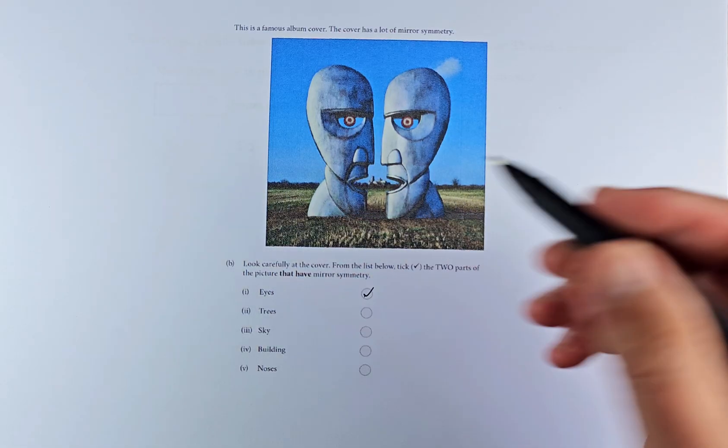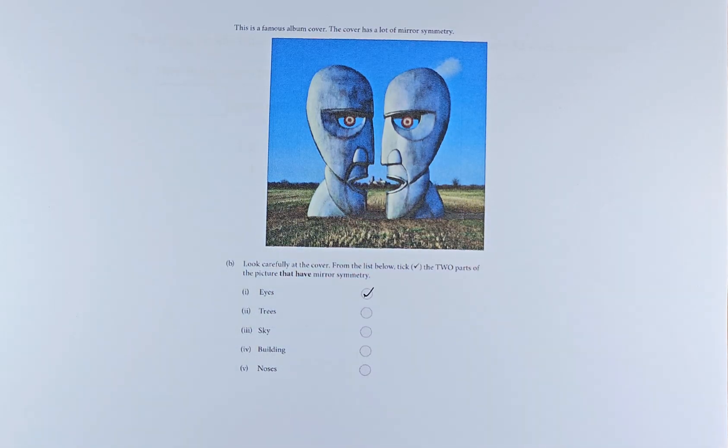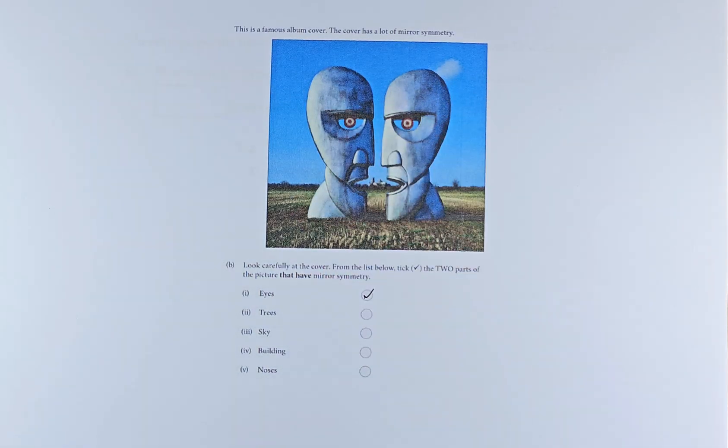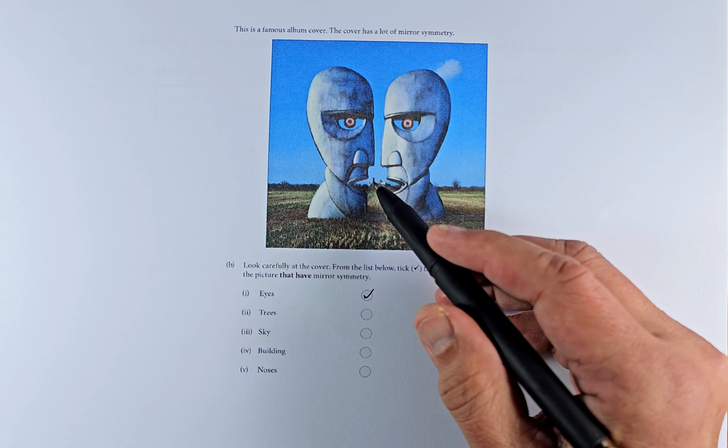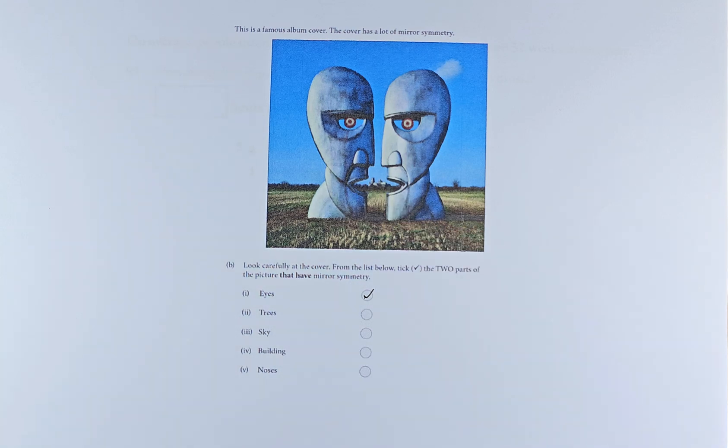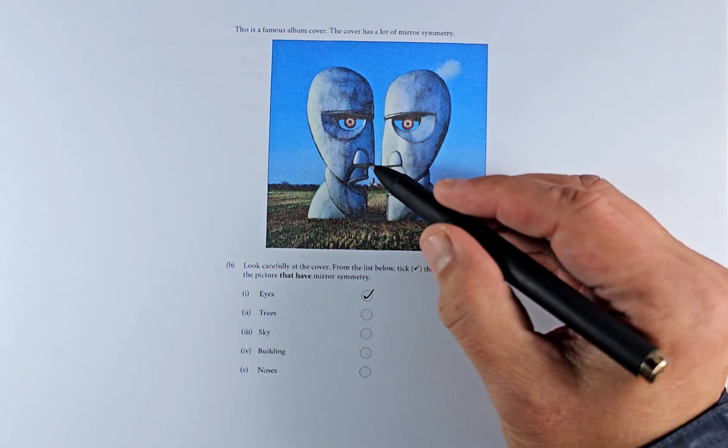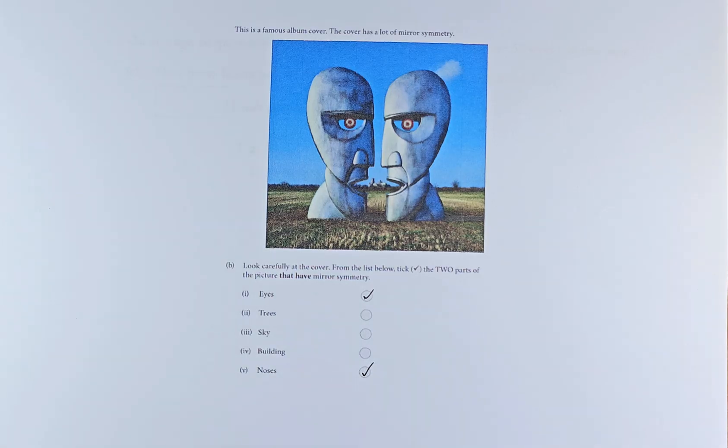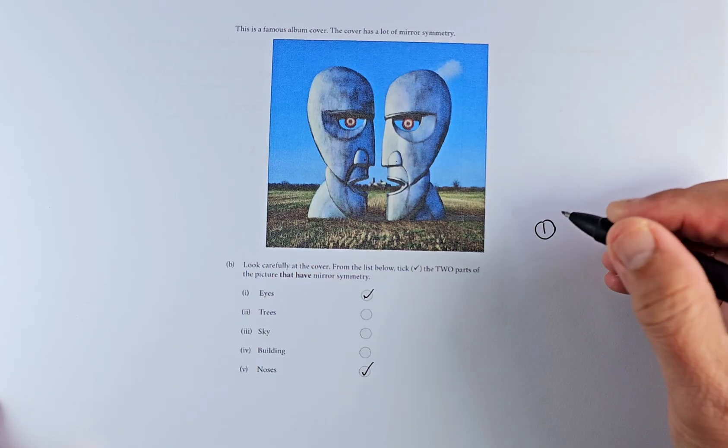Trees here, they are not symmetrical, so we say no. Sky, there's a little cloud here. There's no cloud there, so it's not symmetrical. The building here is not symmetrical because it doesn't look a mirror image of each other. The noses here and here, it looks symmetrical to me. So this is the two, the eyes and the nose. If you get that right, that will be another outcome 1.